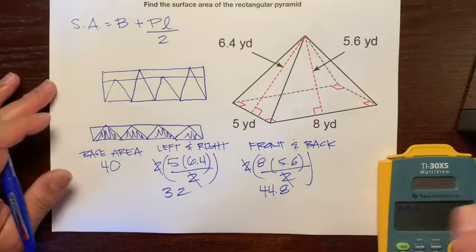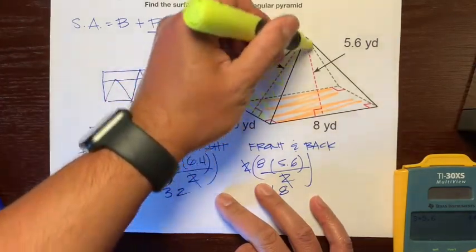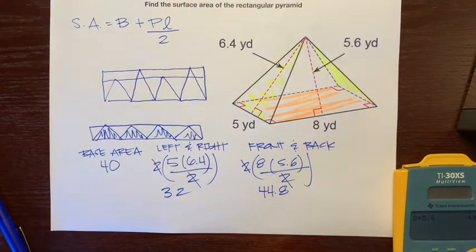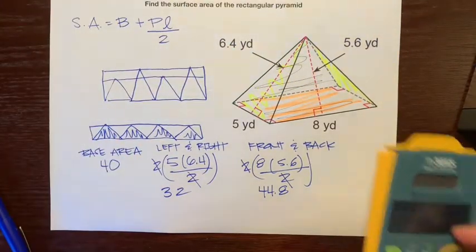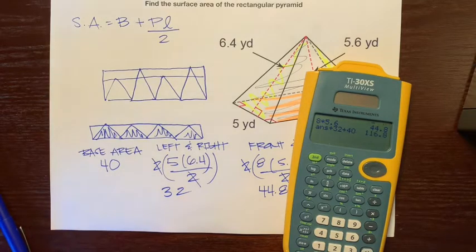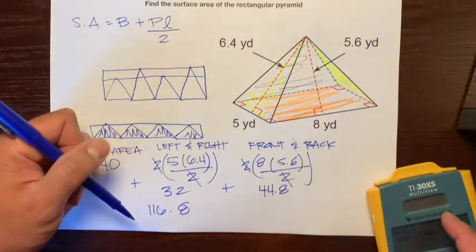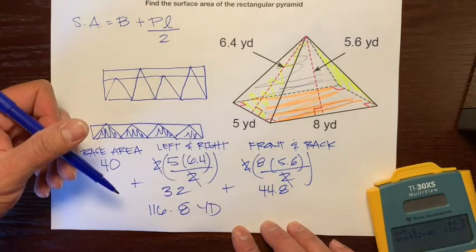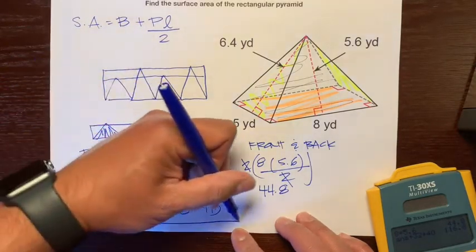Let's make sure we have all the data we need. We have the area of the base, which is 40. We have the left and the right areas combined, which are 32. And we have the area of the front and the back, which is 44.8. Now let's find the sum of all these numbers: 44.8 plus 32 plus 40 equals 116.8. And remember, surface area is how many squares fit on the surface, so it's yards squared — 116.8 yards squared.